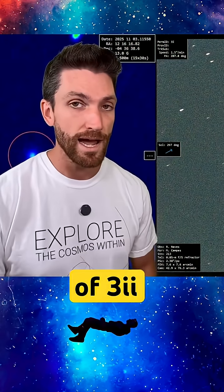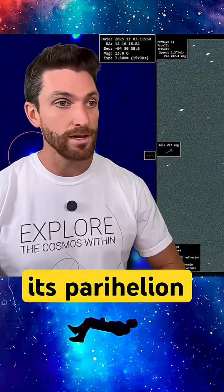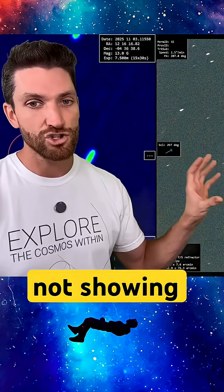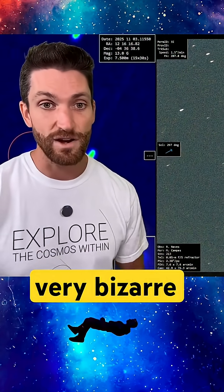We have new imagery of 3i Atlas post-perihelion through its perihelion, tons of light radiation, and yet even with all that it is not showing any sort of obvious tail. That's very bizarre.